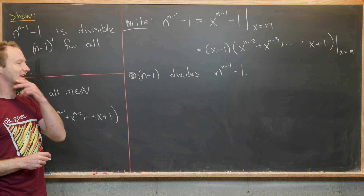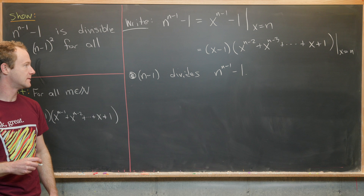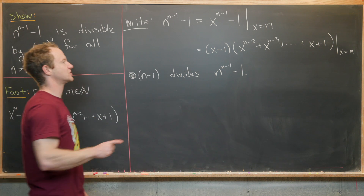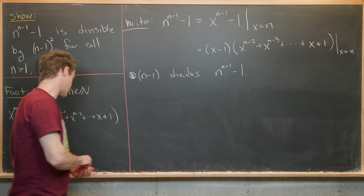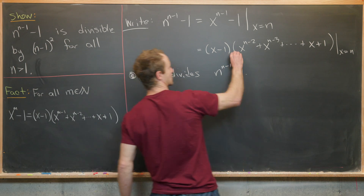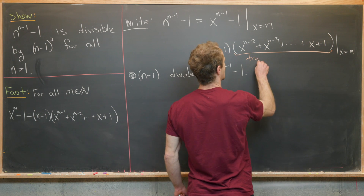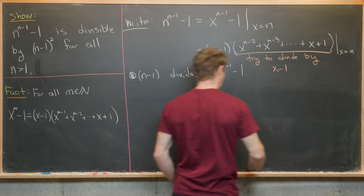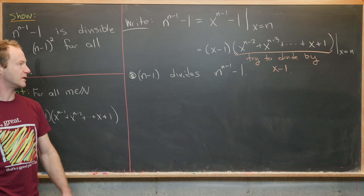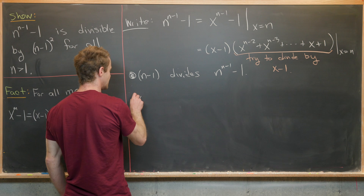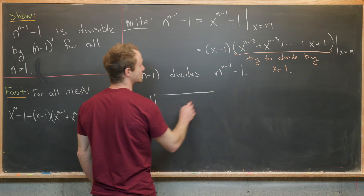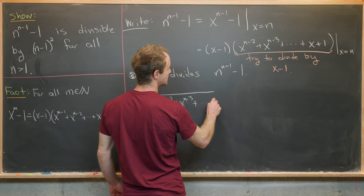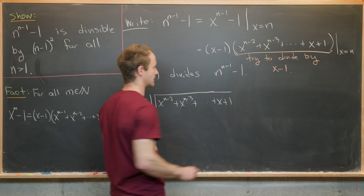To get n minus 1 squared instead of just n minus 1, we want to revisit this polynomial argument and try to factor out another x minus 1 from this leftover term. We'll do that with polynomial long division: x minus 1 dividing into x to the n minus 2 plus x to the n minus 3, all the way down to x plus 1.